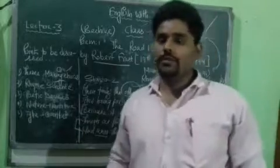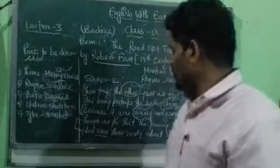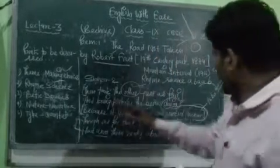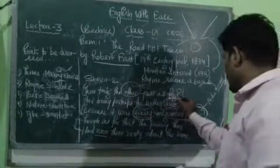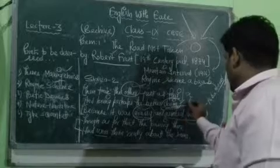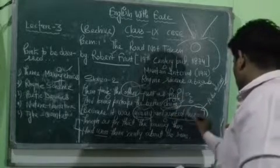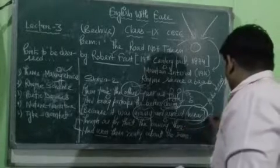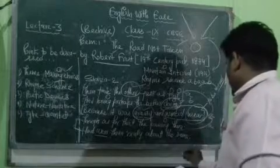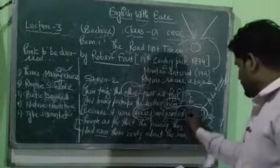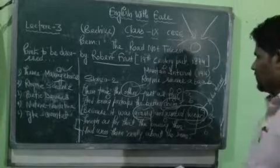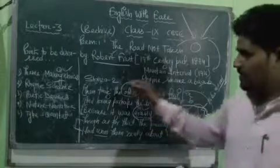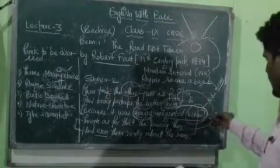Before moving to stanza three, let us note the rhyme scheme of stanza two. The ending words are: 'fair' (A), 'claim' (B), 'wear' (A), 'there' (A), 'same' (B). So the rhyme scheme is again A, B, A, A, B — the same as stanza one.